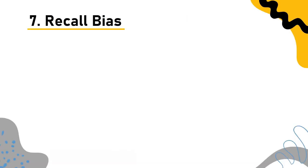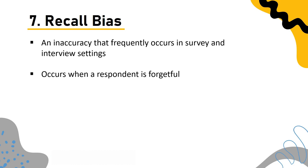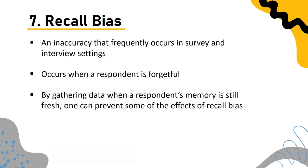Recall bias: Recall bias is an inaccuracy that frequently occurs in survey and interview settings when a respondent is forgetful. It is not a matter of having a good or bad memory — selective memory is natural. Recall bias cannot be completely eliminated; you can only accept it as a common data collection error. One way to reduce its effects is by gathering data when the respondent's memory is still fresh.